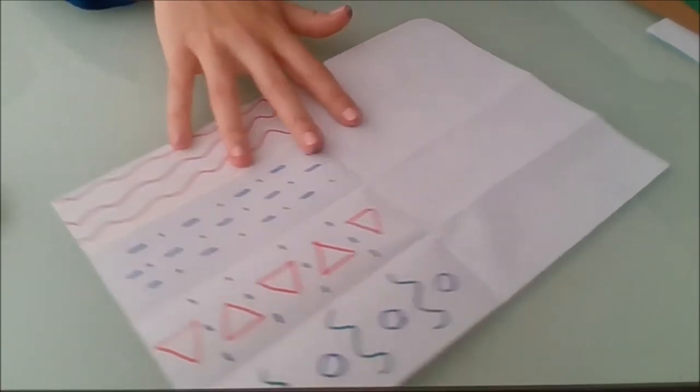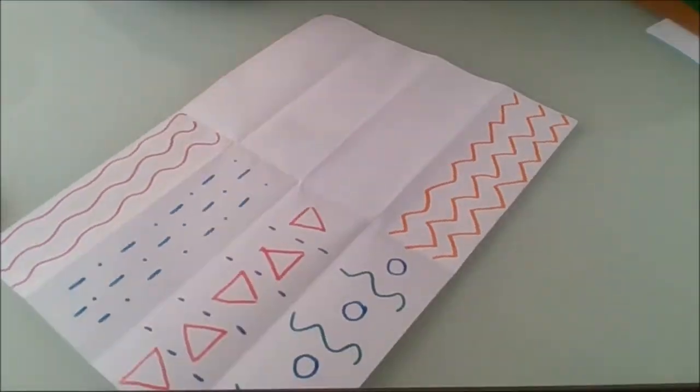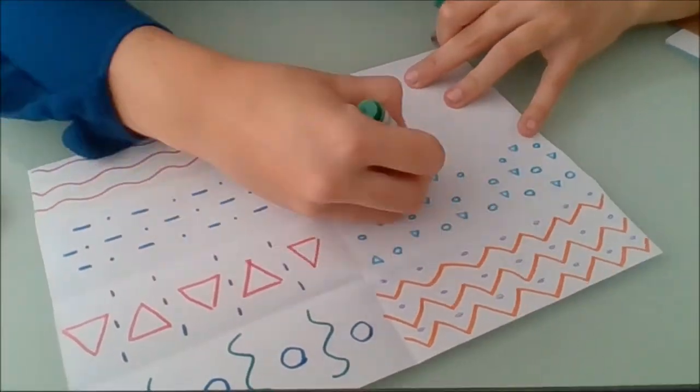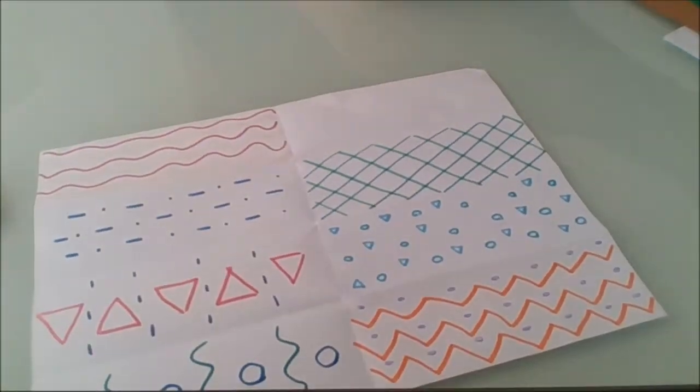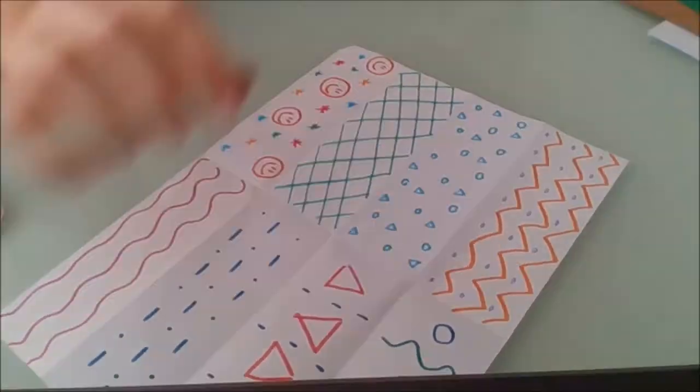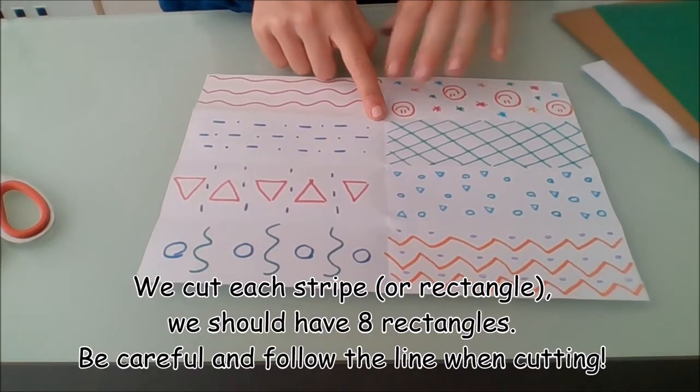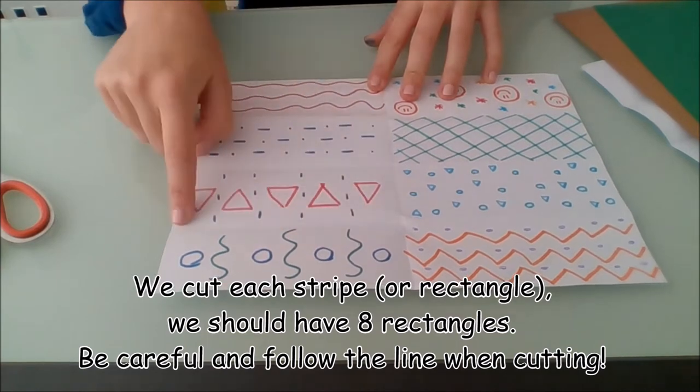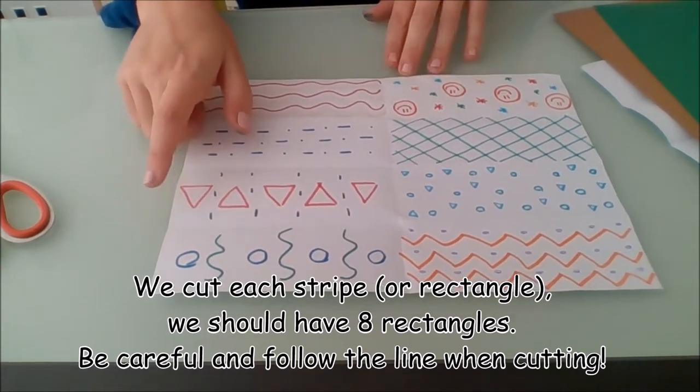Now we decorate the other side. Now that we have our papers colored, you need to cut each paper in a stripe. Make sure you follow the little lines you made when you were folding, that you are cutting carefully.